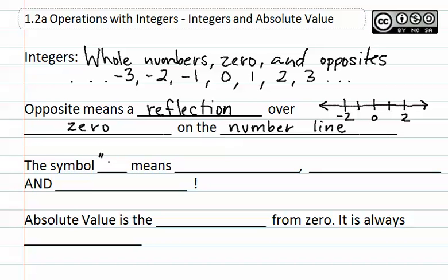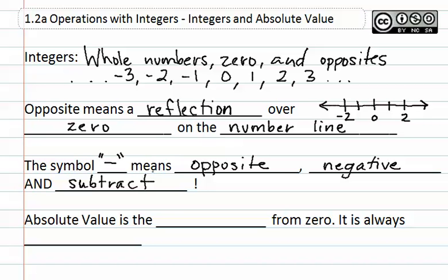The symbol that looks like the negative or subtraction sign means three options: the first is opposite, the second is negative, and the third is subtract. Keep in mind that this negative or dash symbol means all three of these options, so when seeing one in a problem, remember that it can mean opposite, negative, and subtract all at the same time.